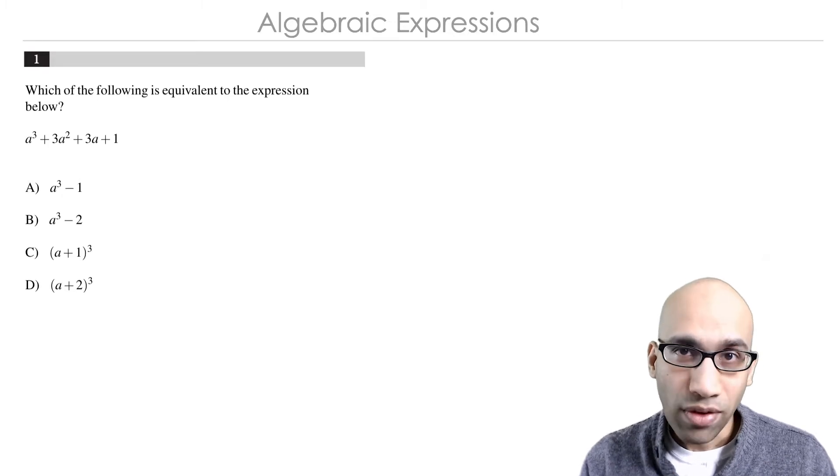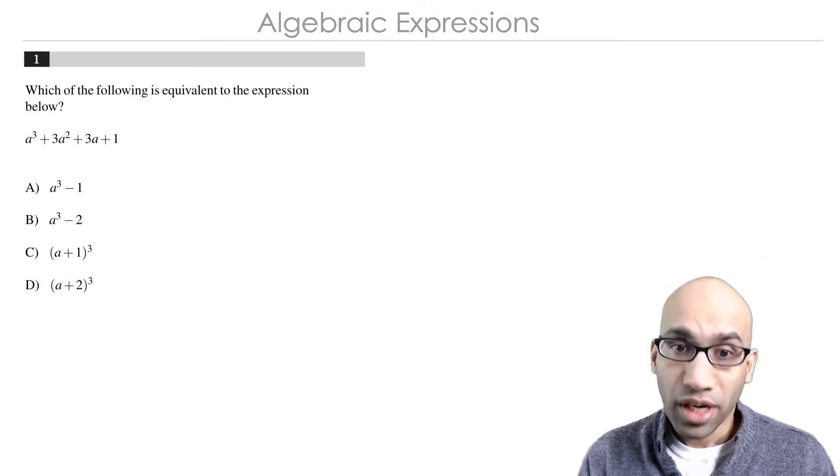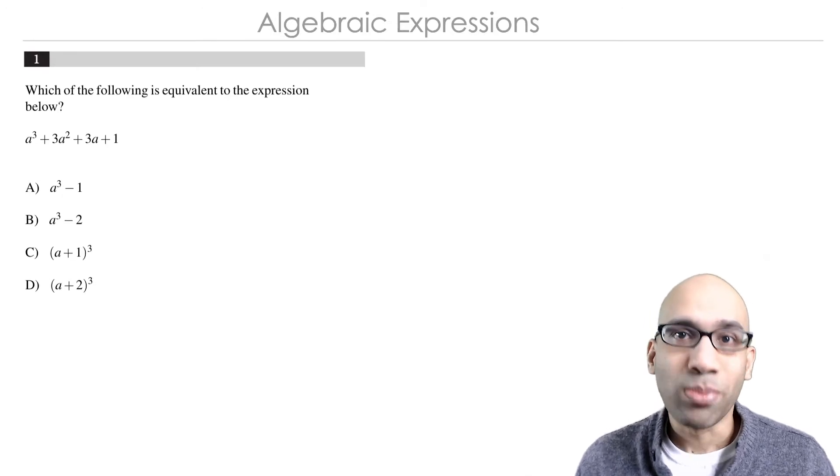And whenever you see the word equivalent, you're going to set the variable to be equal to 0. The variable here is a, so you just set it to be equal to 0.